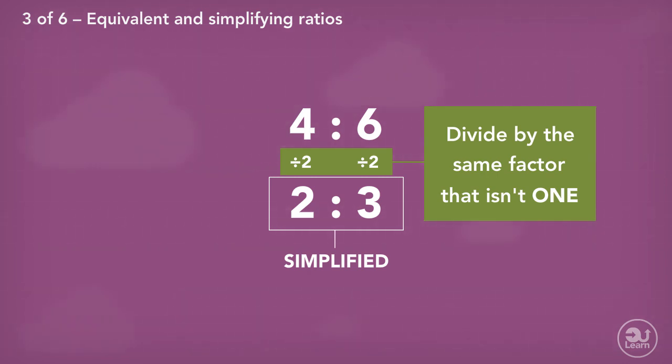The factor that both parts can be divided by is two, simplifying the ratio to two to three. The ratio of the first block simplified to the ratio of the second block.